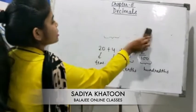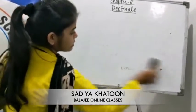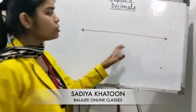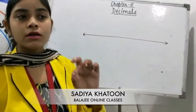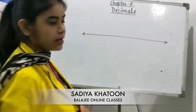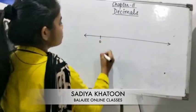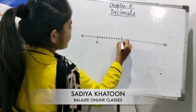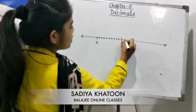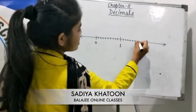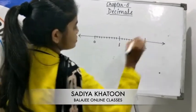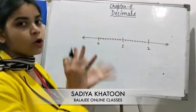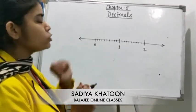Next is the representation of decimals on a number line. Suppose you have to represent 1.2 on a number line. So suppose this is 0, then 1, 2, 3, 4, 5, 6, 7, 8, 9, 10 — this is 1 — 1, 2, 3, 4, 5, 6, 7, 8, 9, 10 — this is 2. If you have to represent 1.2, you will start and know that 1 and 2 will lie between 1 and 2.